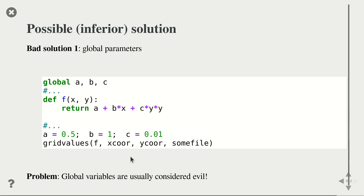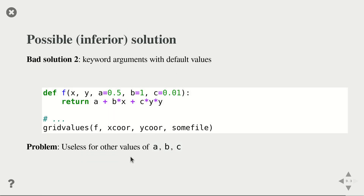One solution is to introduce global variables — make a, b, and c globally available so f only takes x and y, and specify the values before calling grid_values. This might work, but it's considered very bad design. You quickly run into problems when you use the same variable names elsewhere in the program — it becomes very messy.